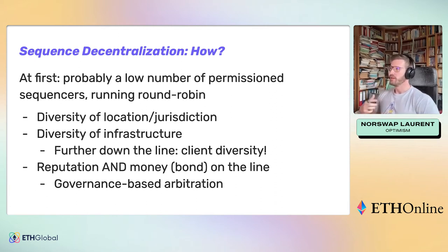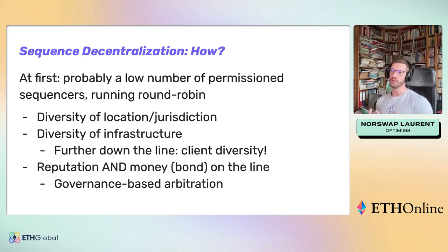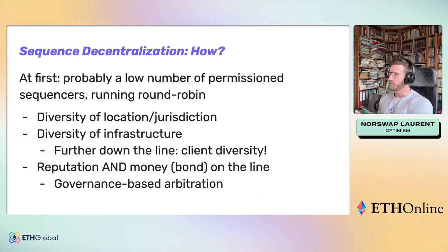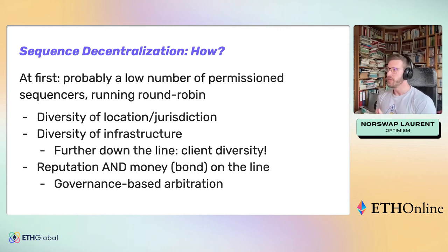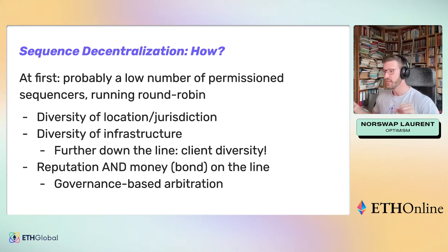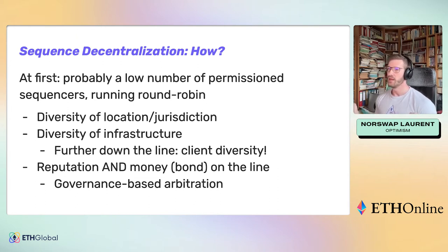So how do we decentralize? Like everything, there's a short-term view and a long-term view. At first, the idea we're playing with is to have a small number of permissioned sequencers running round-robin. One sequencer takes care of a certain number of L2 blocks — like 10 or 100 — and then another sequencer takes over. If one sequencer is misbehaving or censoring, it can only do that for a limited number of blocks. If we diversify the sequencer set — different countries, vested interests, known entities with reputation or a bond that governance can slash — then at least one sequencer will behave correctly and the chain will make progress.